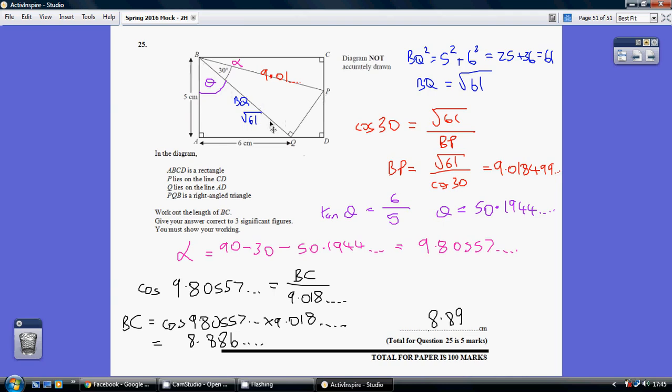I've then looked at this triangle BQP, knowing that I now know the adjacent side, and I've worked out the hypotenuse of that by using cos 30 equals adjacent over hypotenuse. So allowing me to work out that BP is 9.01 dot dot dot. So I now know this length here.